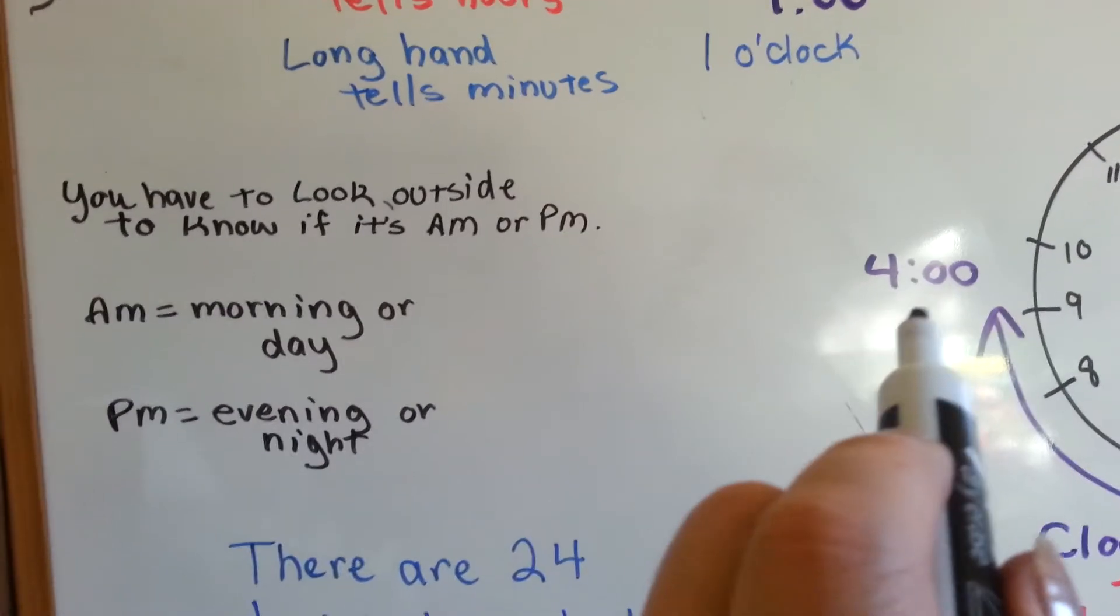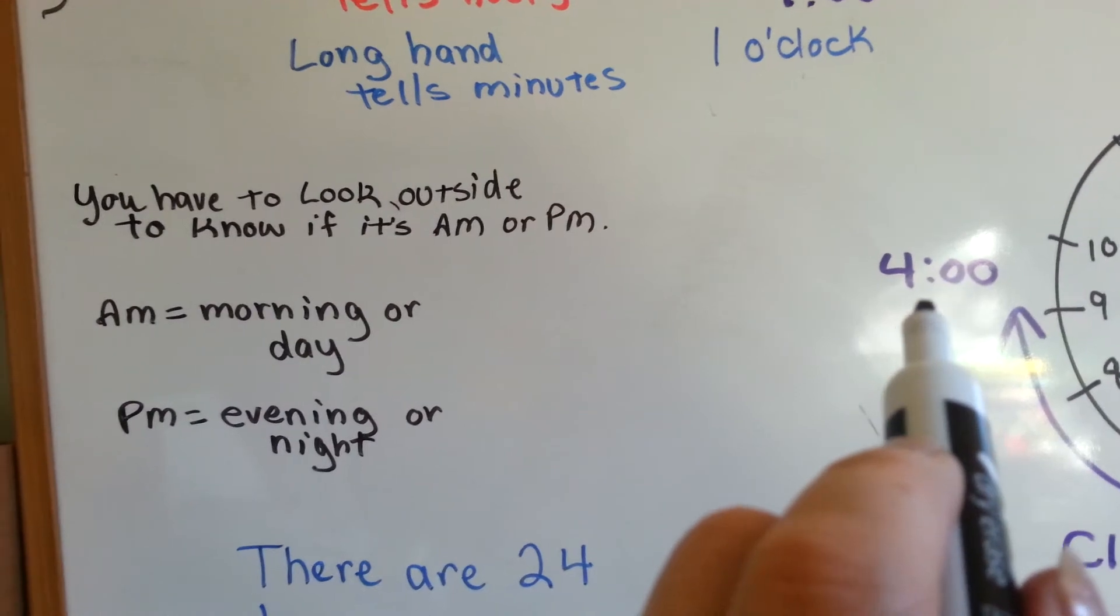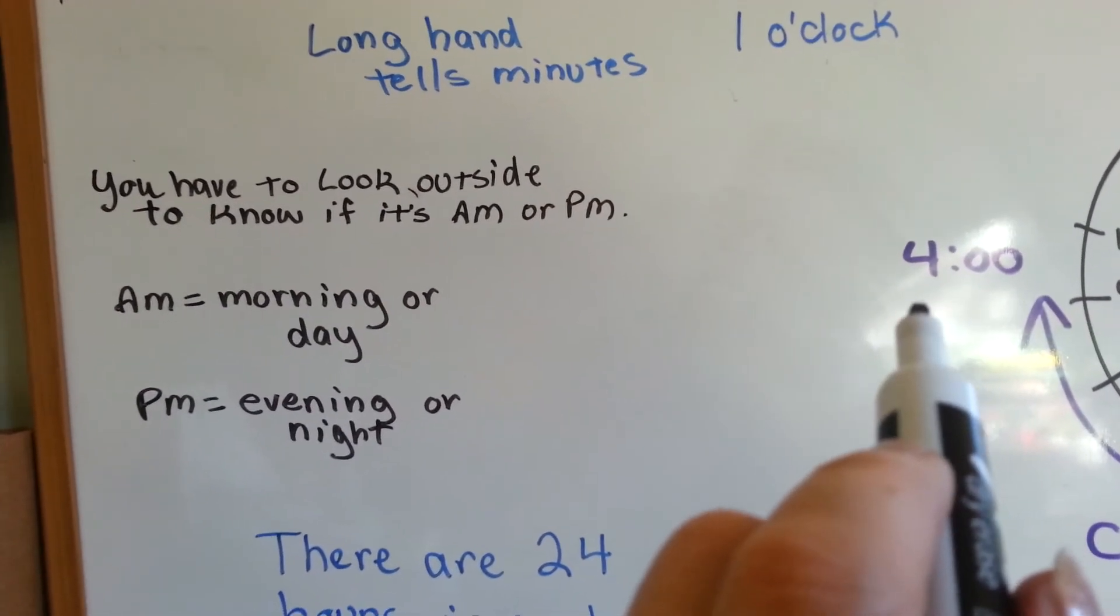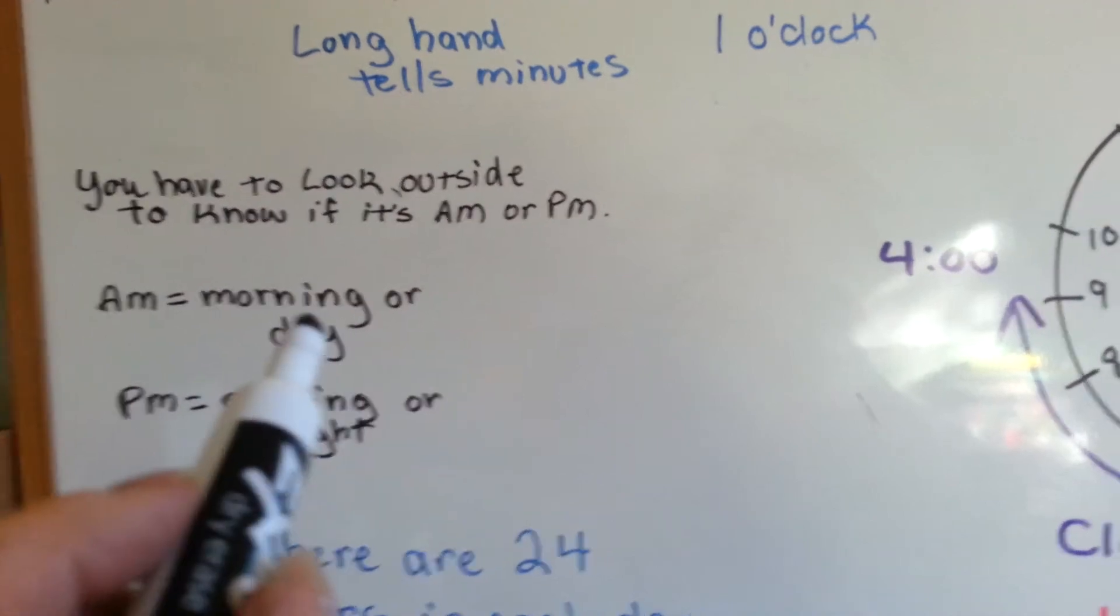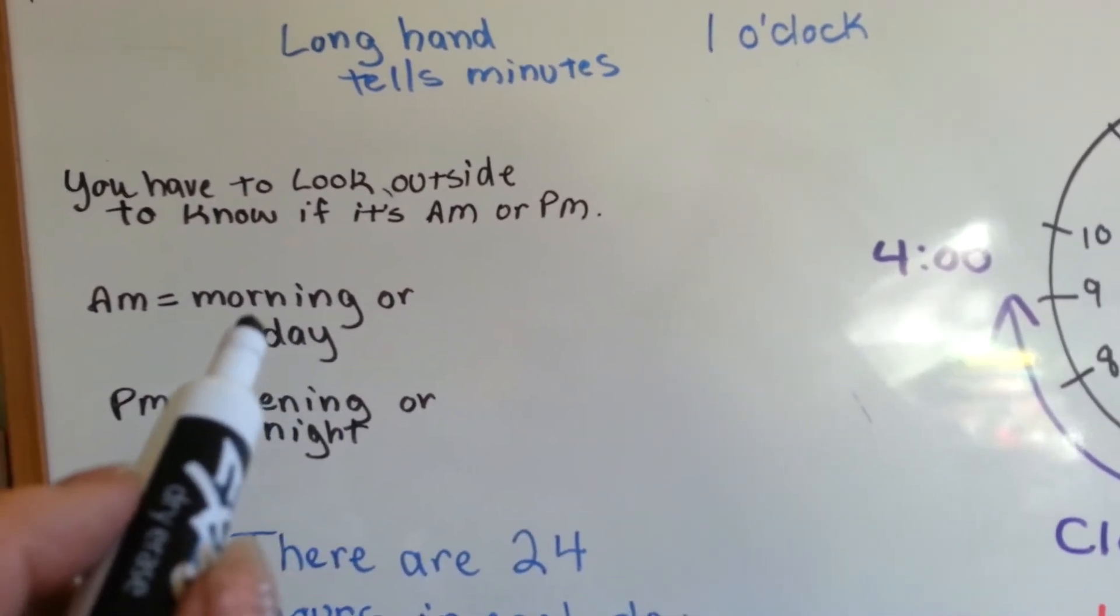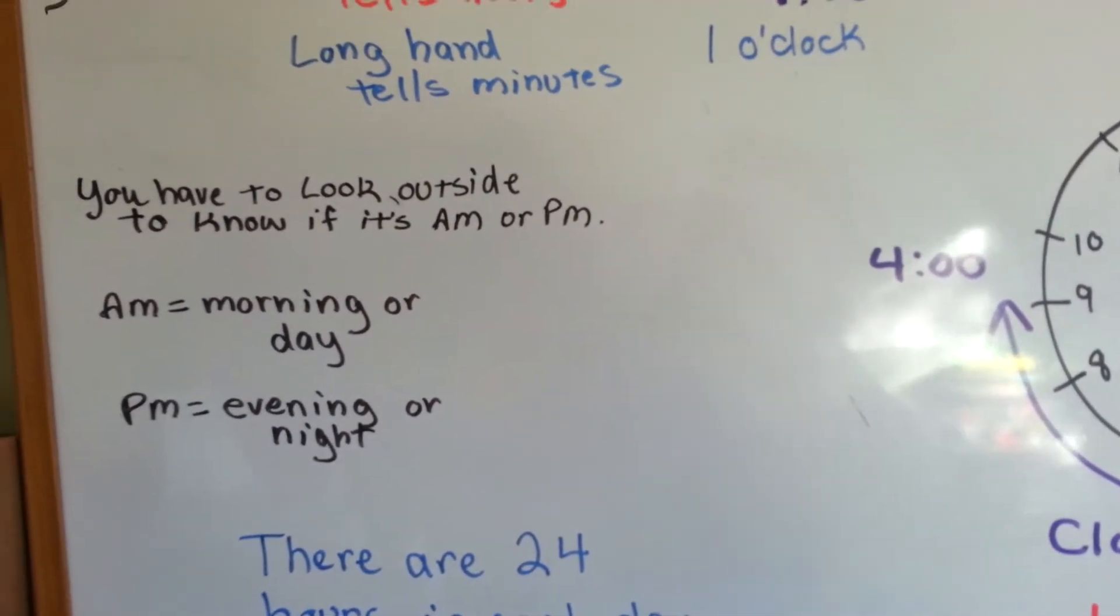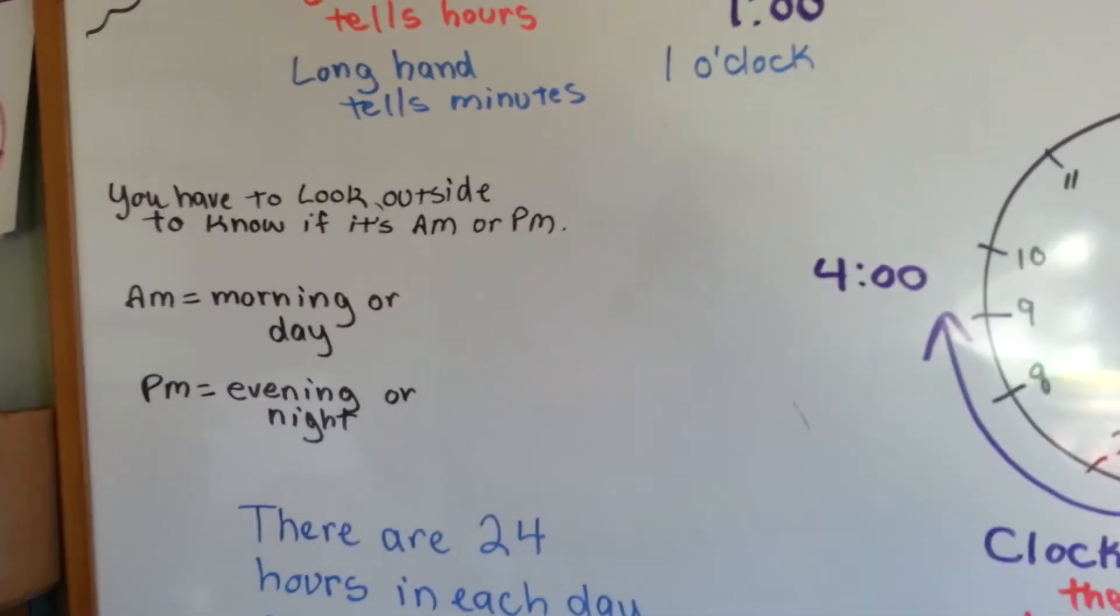So someone might say it's 4 o'clock p.m., that's 4 in the afternoon. If it was 4 a.m., you haven't woken up for school yet. You've got a couple more hours to sleep before school. But I bet some farmers are up.